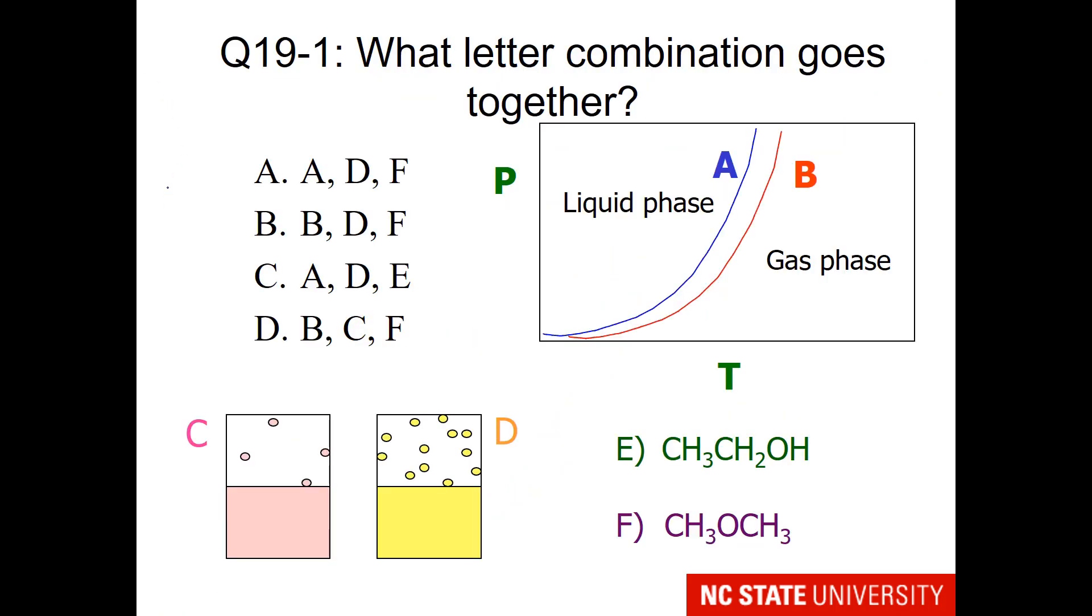Here is a very challenging question. We would like to know what letter combination goes together. I recommend solving this problem by sorting the answers into two boxes. So let's look at the liquid-vapor equilibrium. Does A or B have stronger intermolecular forces? Choose one category for A and the other category for B. Do the same thing for C. Does C or D represent a solution with stronger intermolecular forces? Place one of those letters with strong and the other with weak. And finally, here is ethanol and dimethyl ether. Sort those as having strong or weak intermolecular forces, and you'll find one of these matches.